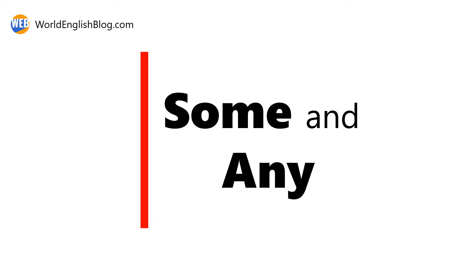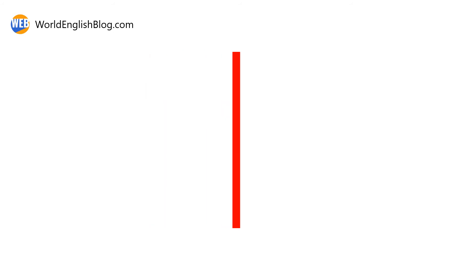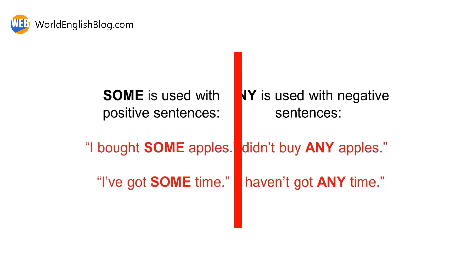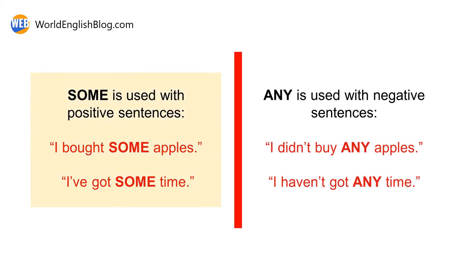Some and any — what's the difference? Some is used with positive senses: 'I bought some apples,' 'I've got some time.' Any is used with negative senses: 'I didn't buy any apples,' 'I haven't got any time.'